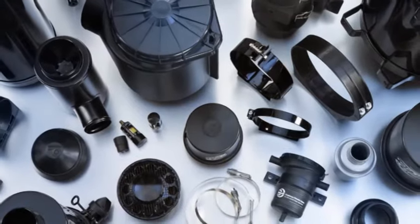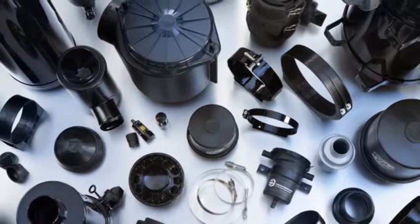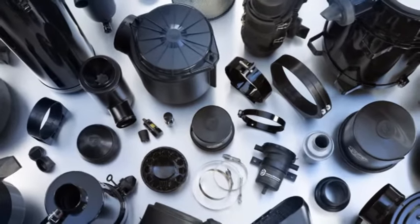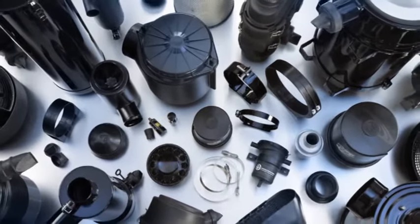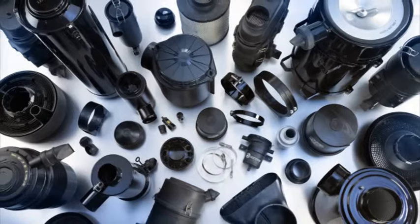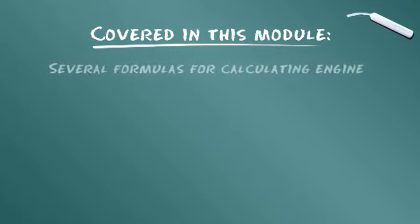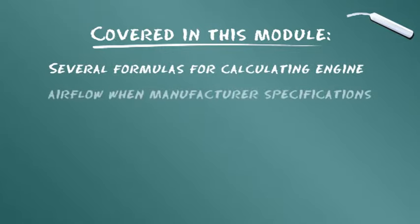Dieses Begleitmodul zu Modul A2A liefert weitere technische Details sowie eine praktische Einführung in das Auswahlverfahren der Donaldson Luftfilter. Auch beinhaltet dieses Modul Formeln zur Berechnung des Motorenluftdurchsatzes, dort wo keine entsprechende Spezifikation des Herstellers verfügbar ist.